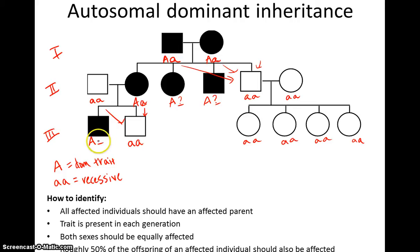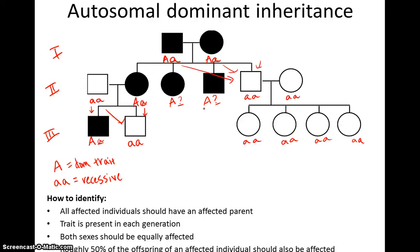Over here I can also tell: I've got a dominant individual, but because dad is little a, little a, that's the only thing he has to give. Mom must also have a little a — that's the only way to get a child that is recessive. At this point the pedigree is complete. These are all the genotypes I can determine. Individuals without children remain as big A question mark.